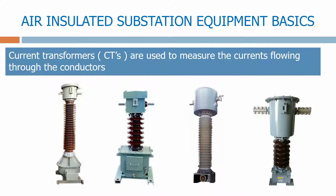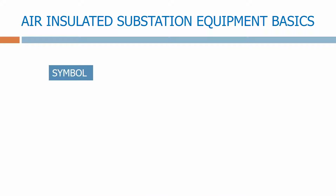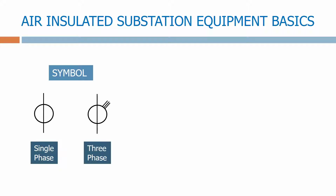Current transformers, or CTs, are used to measure the currents flowing through the conductors. Here's a typical symbol for a current transformer — firstly a single phase current transformer, and a three phase current transformer.